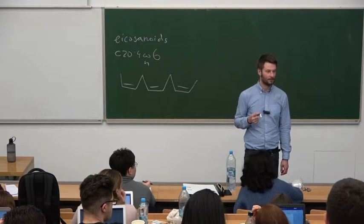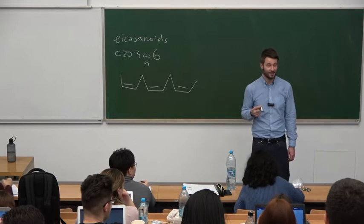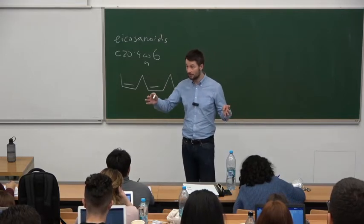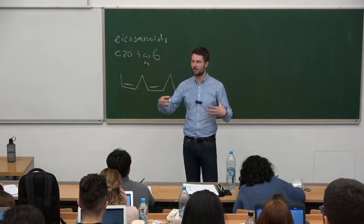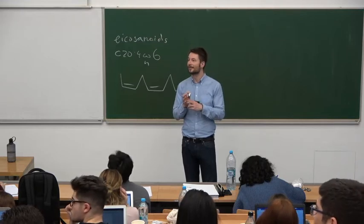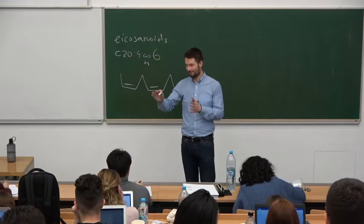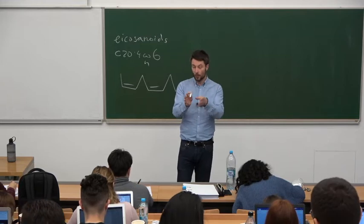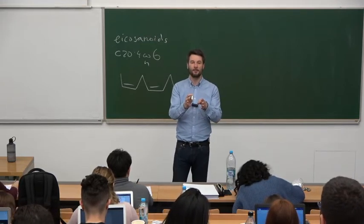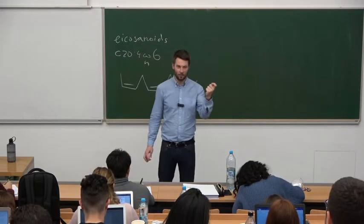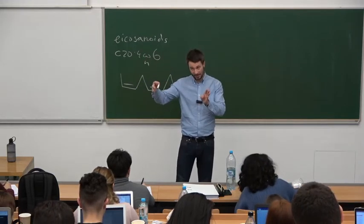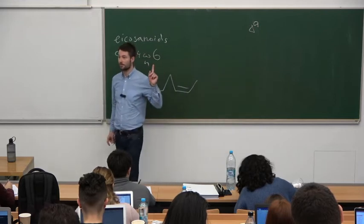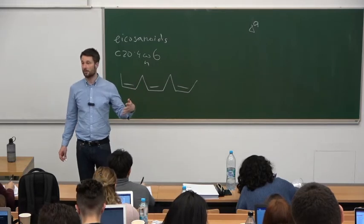When we elongate, we add two carbons always at the carboxy end, so the omega can never change. This is the reason why omega-6, omega-3, omega-5, omega-4 — all these molecules cannot be synthesized in our body, because we can only place a double bond as far as delta-9 from the carboxyl end. The elongation never changes the omega number. The principle is: understand how these things work and you don't have to memorize anything.